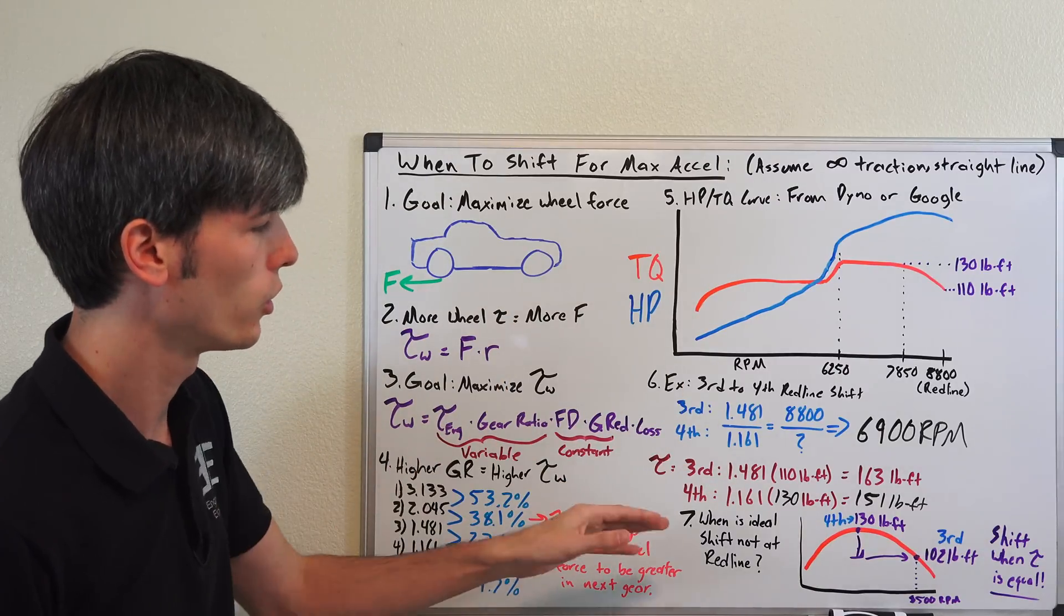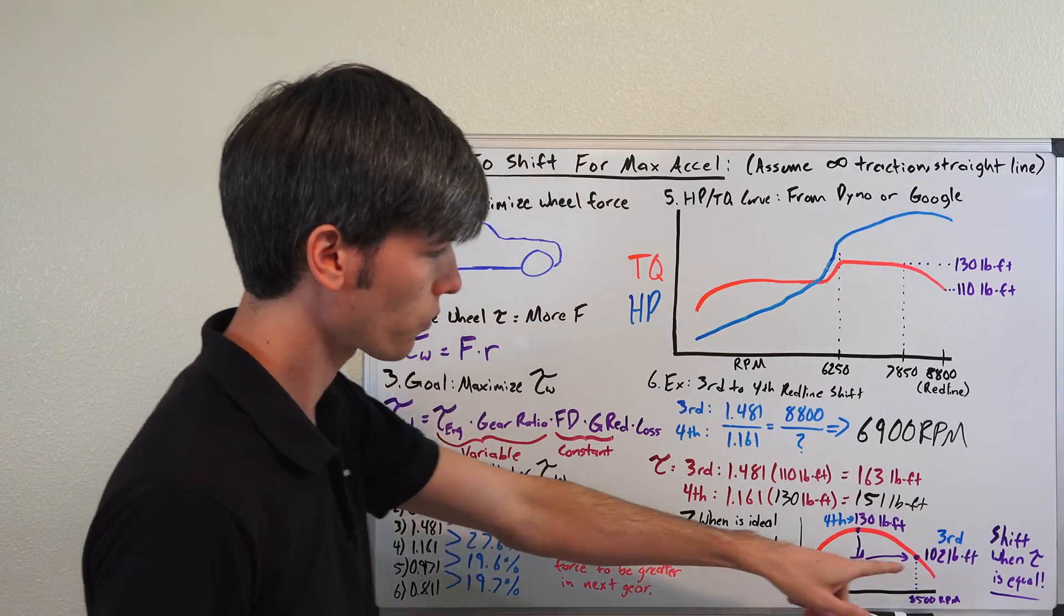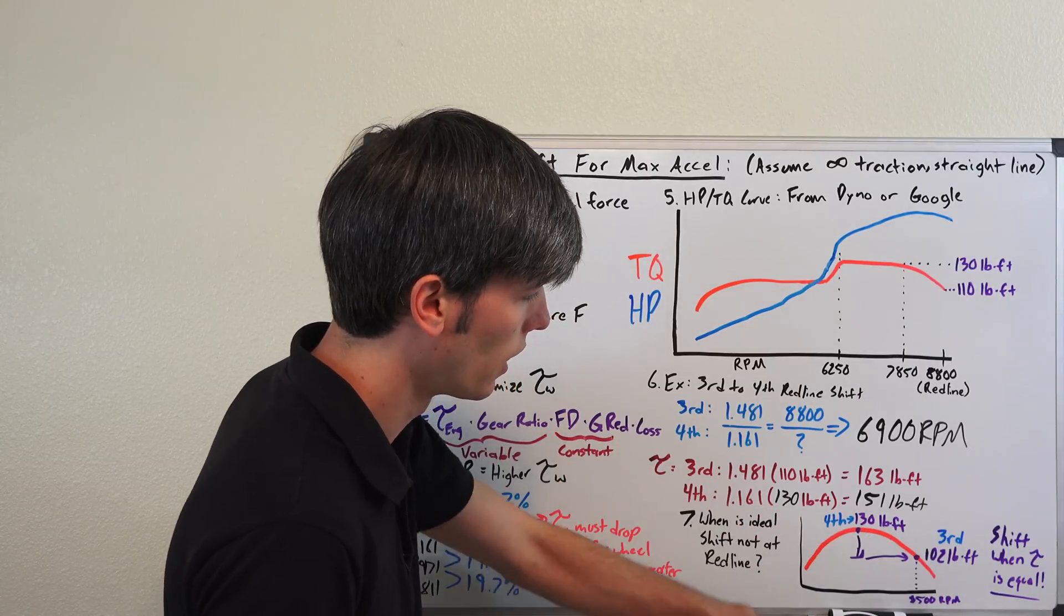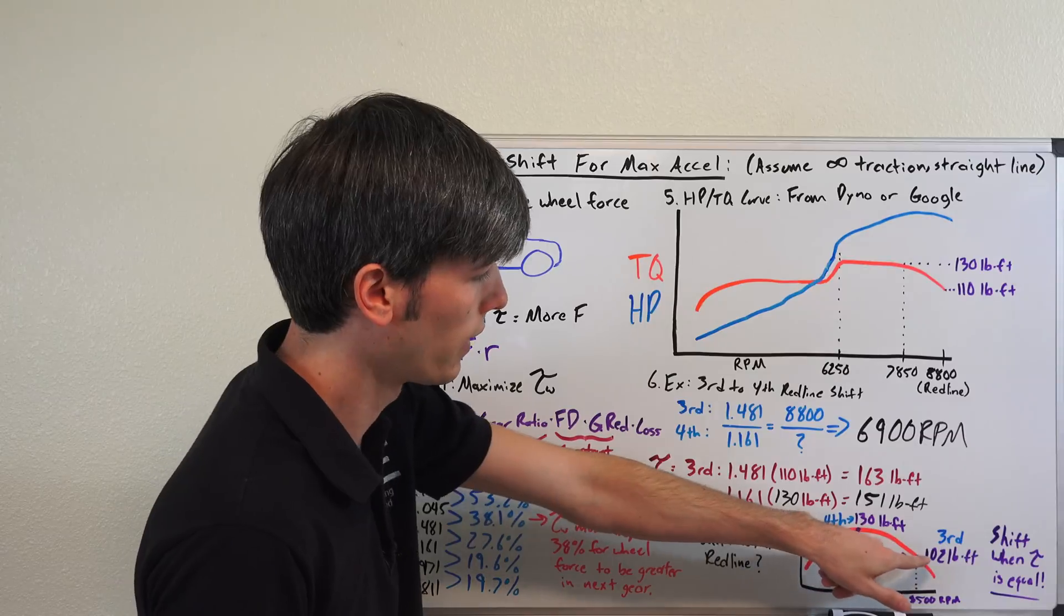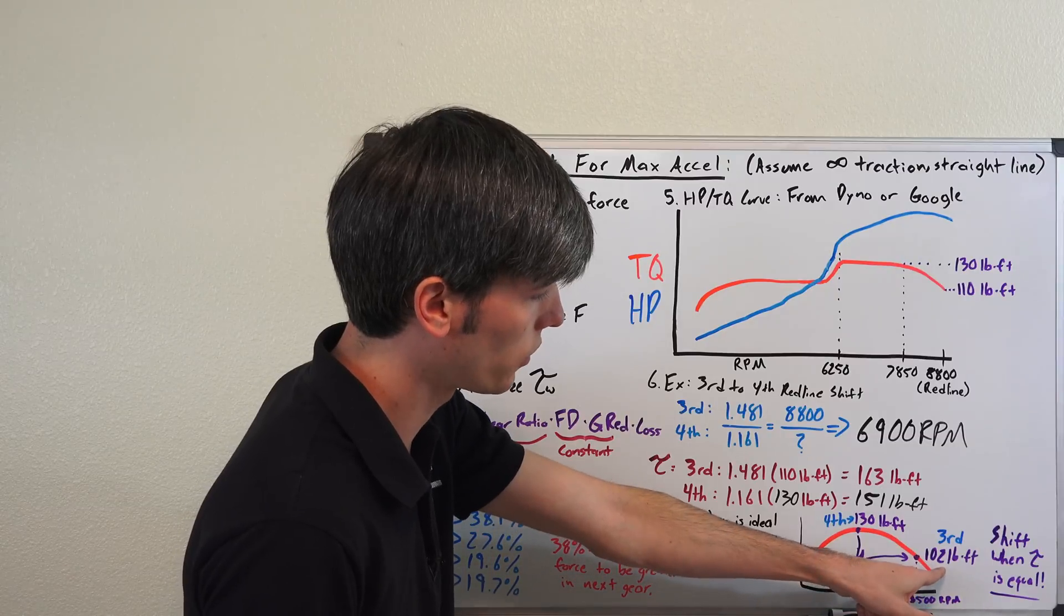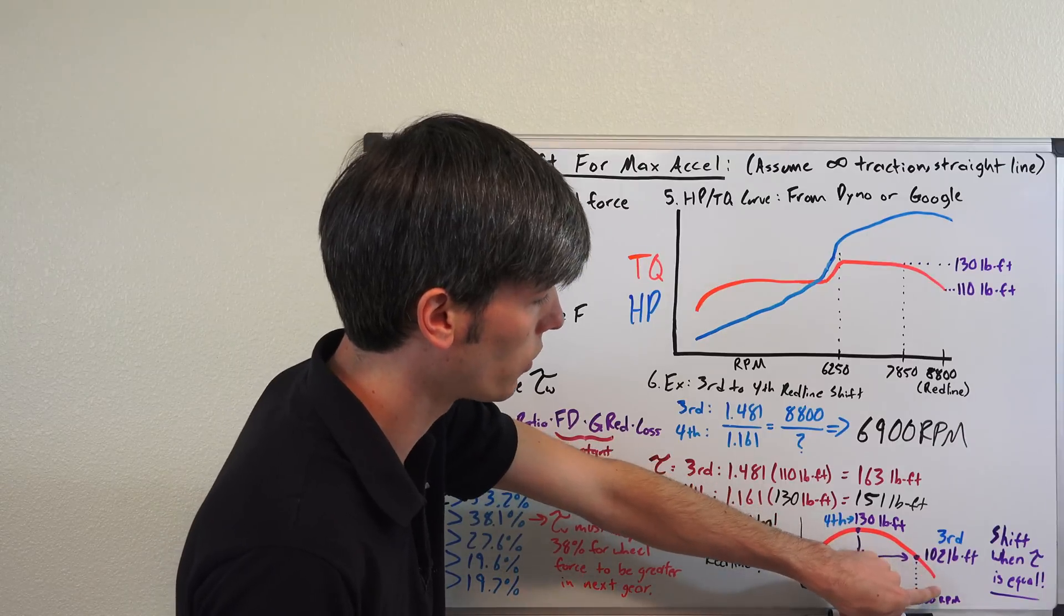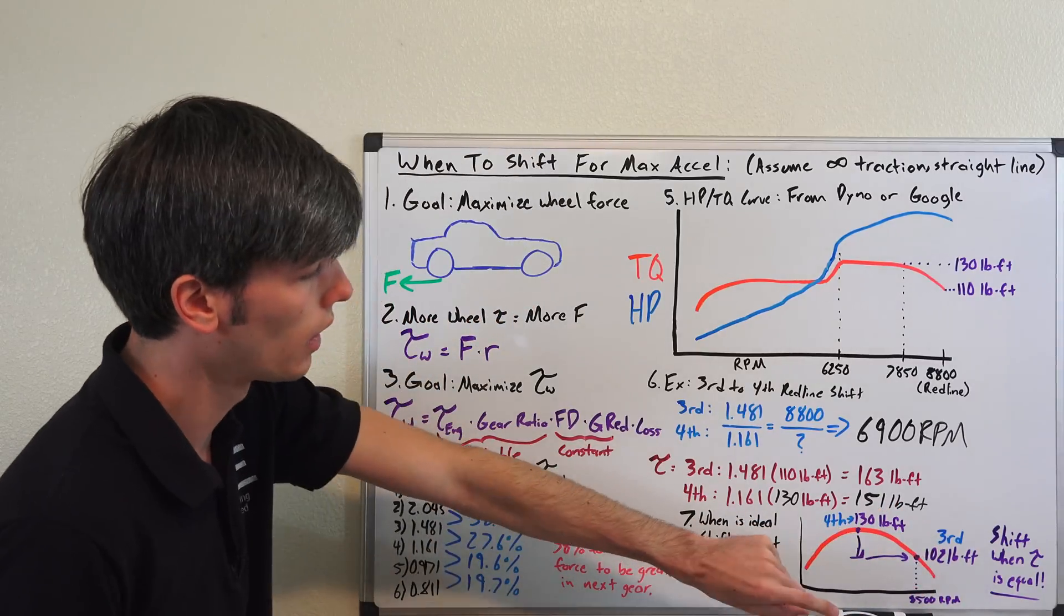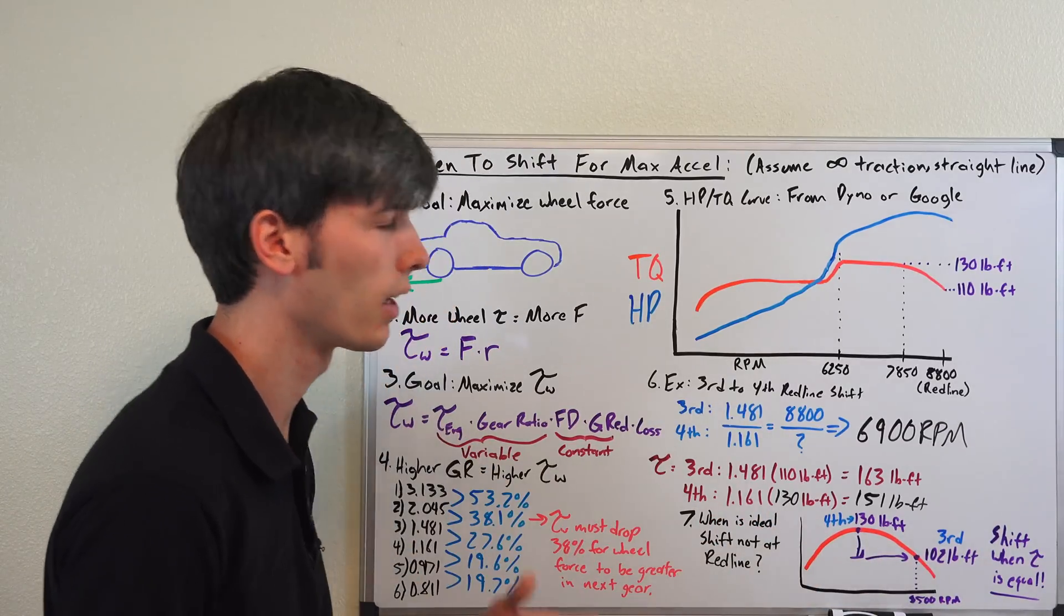So when would it not be ideal to shift at redline? Well, basically, it would be when this number right here is equal for each gear. So let's say you were in third gear at 8500 RPM, and we're in the S2000, and we're making 102 lb-ft. Well, at that point, it's about equal to being in fourth gear with a gear reduction with 130 lb-ft. Now, this is less than we have here, but this makes the example work. So if you were at 8500 RPM, and this was your engine torque, what you want to know is that if you keep going past that, your engine torque goes down, and as a result, you're going to be putting less wheel torque down than if you were to shift into fourth. So this doesn't happen in my car, but it is the case where it would be ideal to shift before redline if something like this happened, and you were going for maximum acceleration.